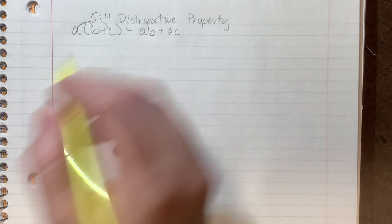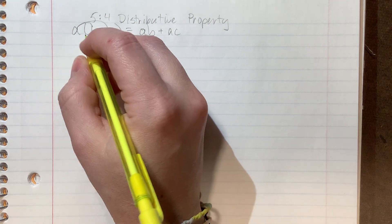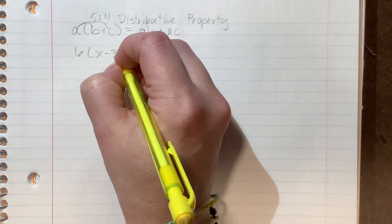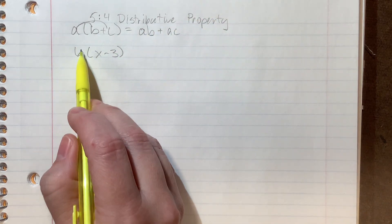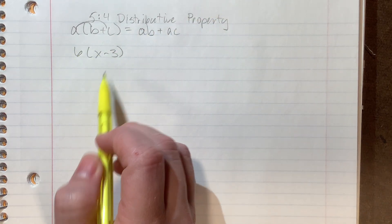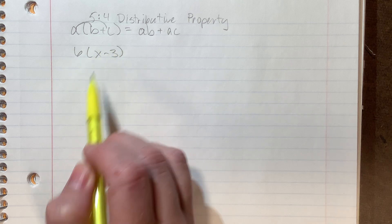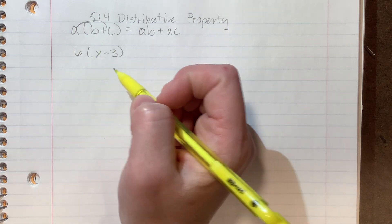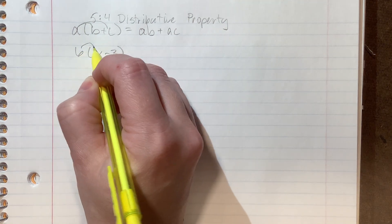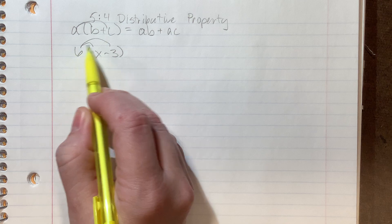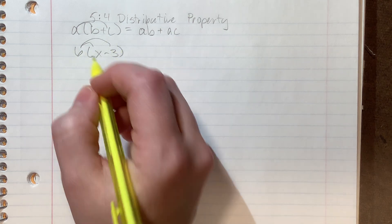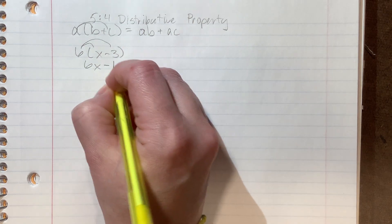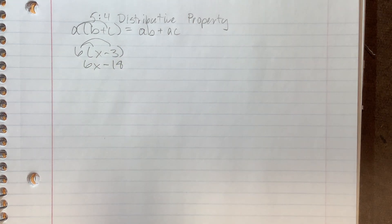That's your distributive property. So what that looks like in numbers, just as an example, say if we have 6 times X minus 3. Because it's the 6 times the stuff on the inside. Now we can't do this math right now unless we knew what X was, which right now we don't. But if I wanted to get rid of the parentheses, I can multiply the 6 through and do 6 times X, which is 6X, and do 6 times 3, which is 18. Done and done.